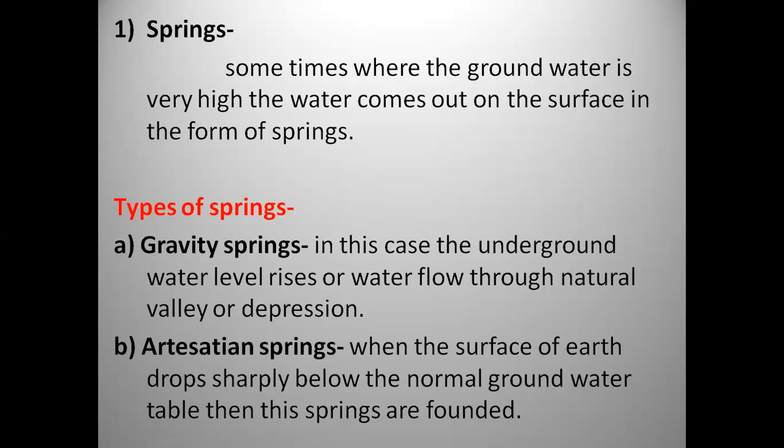In gravity springs, the underground water level rises and water flows through natural valleys or depressions — that is, the water flows under gravity. In artesian springs, when the surface of the earth drops sharply below the normal groundwater table, these springs are formed.